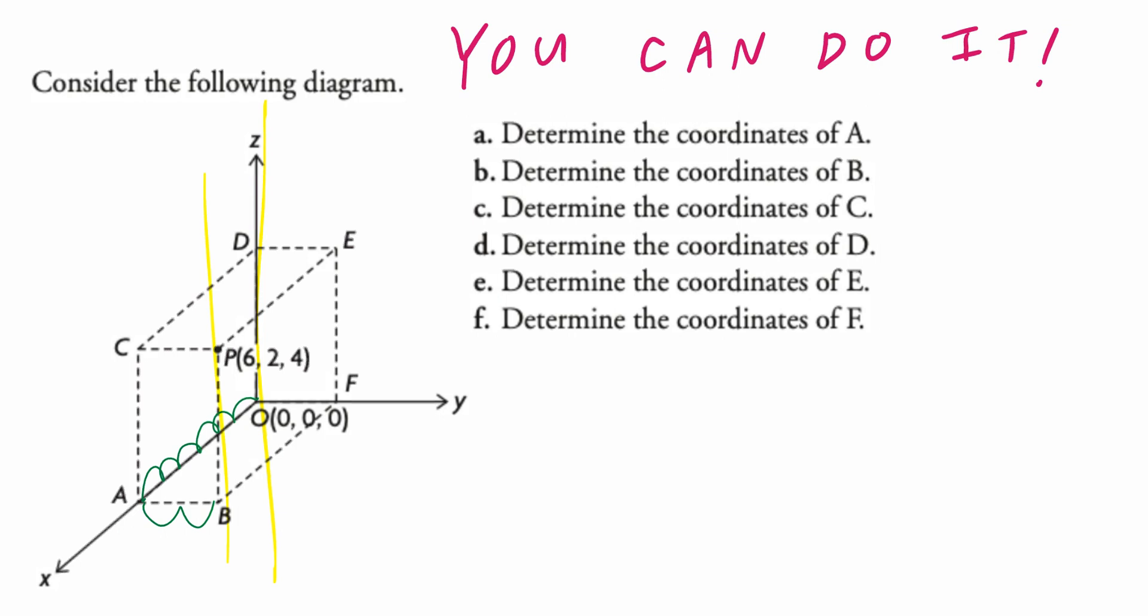Step three, you look at the z-axis and you move up by four units: one, two, three, and four. So again, from (0, 0, 0), that's how you arrive at (6, 2, 4).